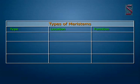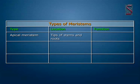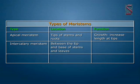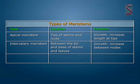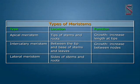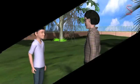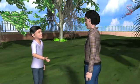The meristematic tissues can be summarized as follows: Apical meristem is found at tips of stems and roots and functions to increase growth in length at tips. Intercalary meristem is found between the tip and base of stems and leaves and functions to increase length between nodes. Lateral meristem is found at the sides of stems and roots and functions to increase diameter.